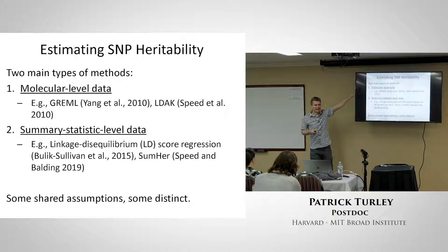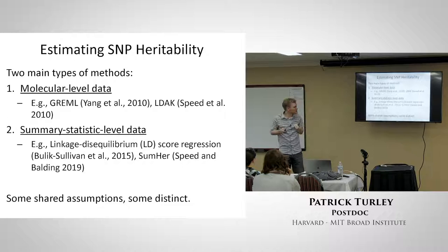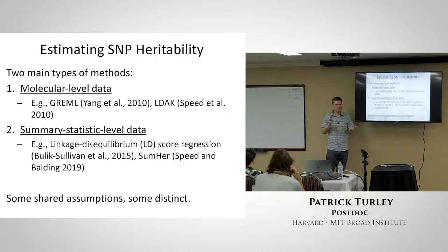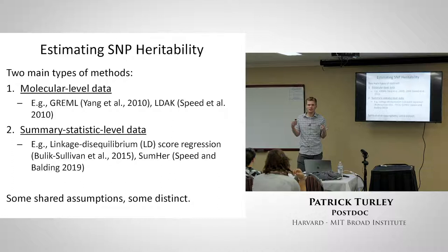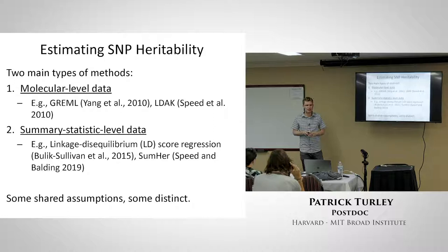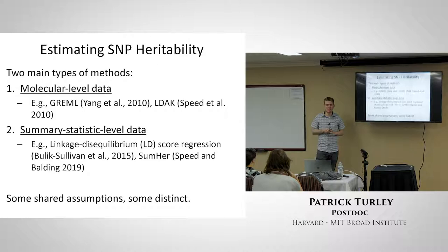There's a big class of methods using molecular-level data, like GREML and LDAC, and summary statistic-based methods like LD score regression or SUMMER, a newer paper. There are many ways to get at this parameter. Most differences between these methods have to do with assumptions about the distribution of effect sizes — what distribution they're drawn from determines what differs between methods. There's a nice summary in Matt Keller's paper, which I believe is on your reading list.